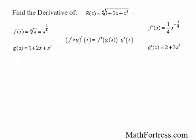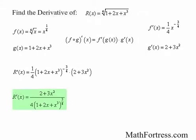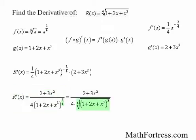Using the chain rule, we take the derivative of f of x evaluated at g of x and multiply by the derivative of g of x. The derivative of r of x equals one-fourth times the quantity 1 plus 2x plus x cubed raised to the power of negative three-fourths, times the quantity 2 plus 3x squared. This simplifies to 2 plus 3x squared over 4 times the quantity 1 plus 2x plus x cubed to the power of negative three-fourths. Alternatively, we could rewrite the fractional power as a radical — either expression is acceptable.